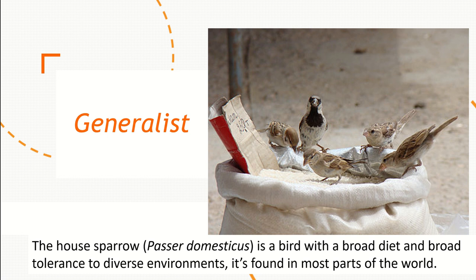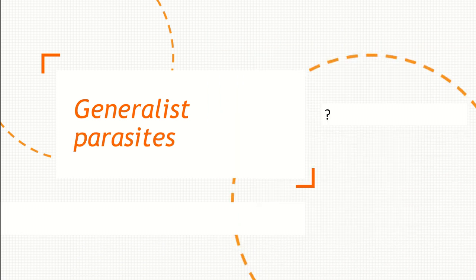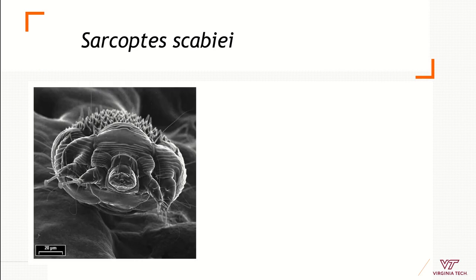Then we have generalist species. Here I'm showing the house sparrow that can live almost worldwide, has a very broad diet, and a tolerance to very diverse climates — a generalist species with a very broad geographic distribution. In parasites we have the same: generalist parasites. An example is Sarcoptes scabiei, which is a mite, a relative of ticks.